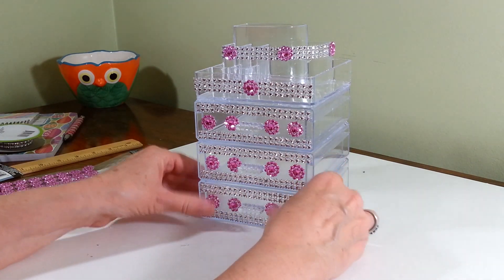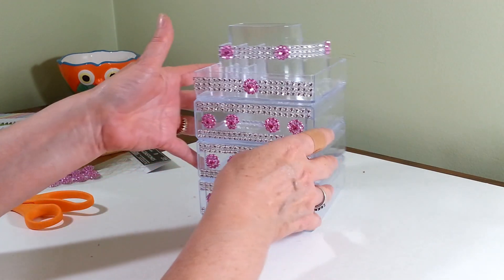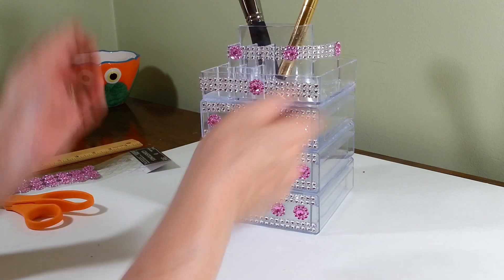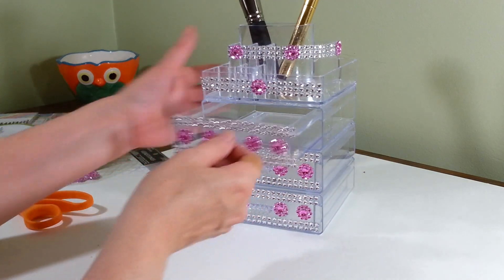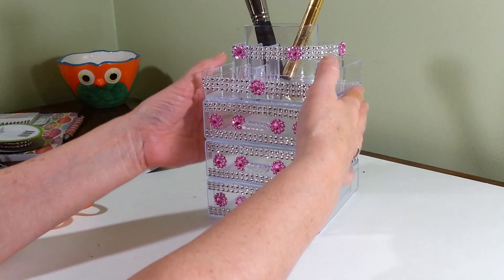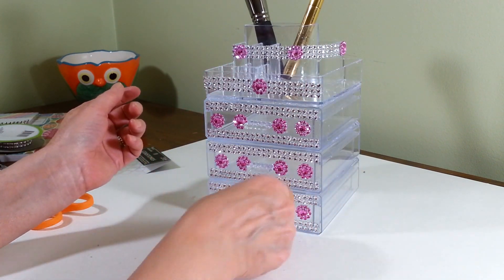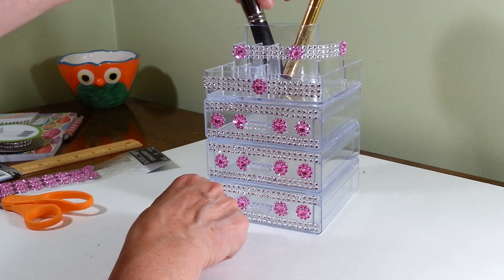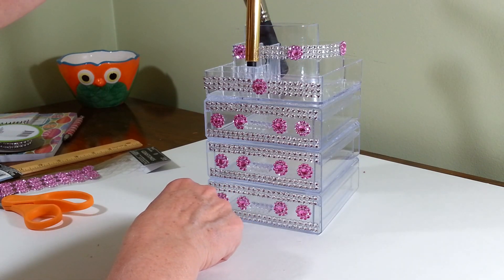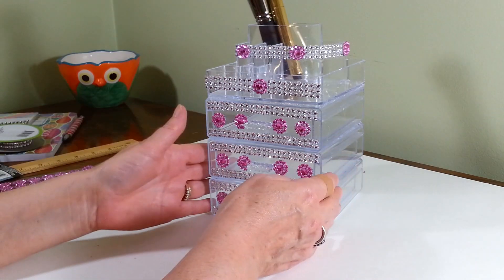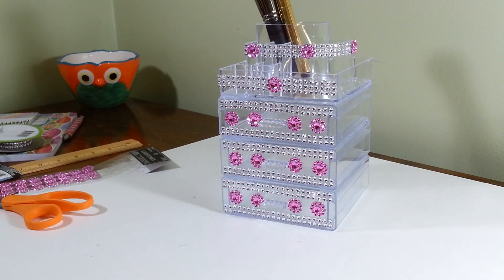So there you have it, guys. It's our little makeup thing and we can put some brushes up on the top. You've got your little drawers for all your little things that little girls have—some ponytail holders, hair clips, whatever. Put all your makeup and nail polish and even put some eyeliners in there. So there you have it, thanks for watching.